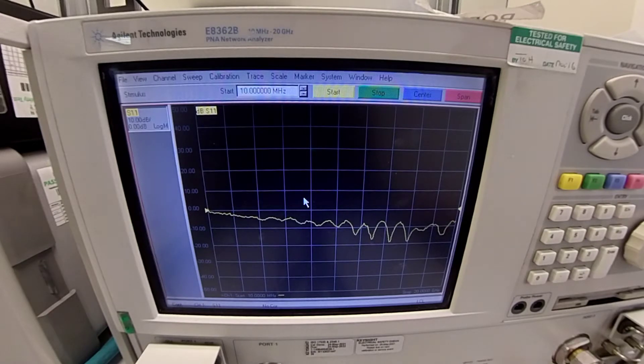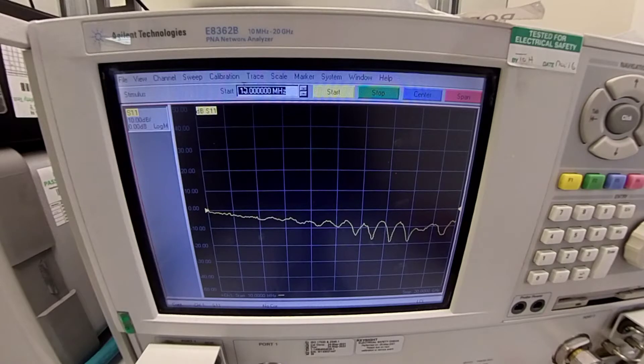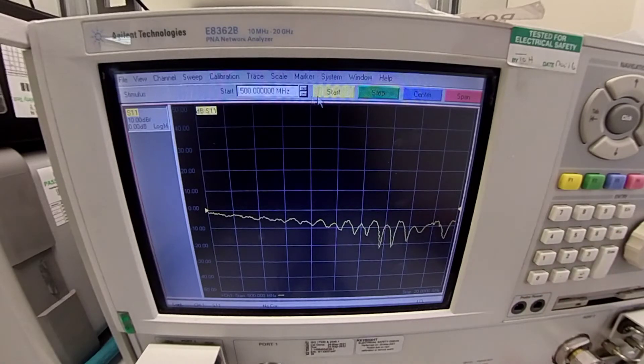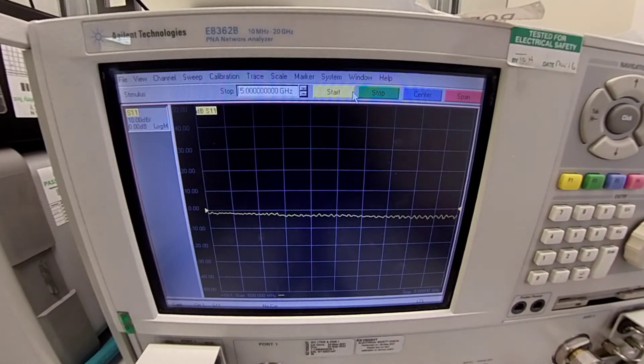First, we select the desired frequency. In this case, let us suppose we select 500 MHz as a starting frequency. In the stop frequency, let's say we select it as 5 GHz. So now, we are set with the frequency.